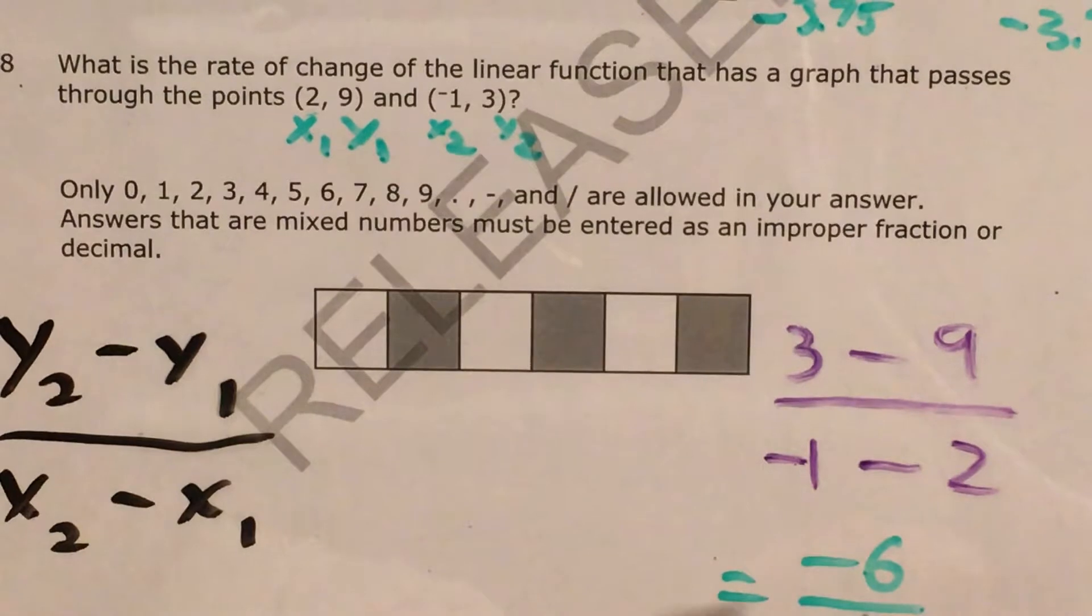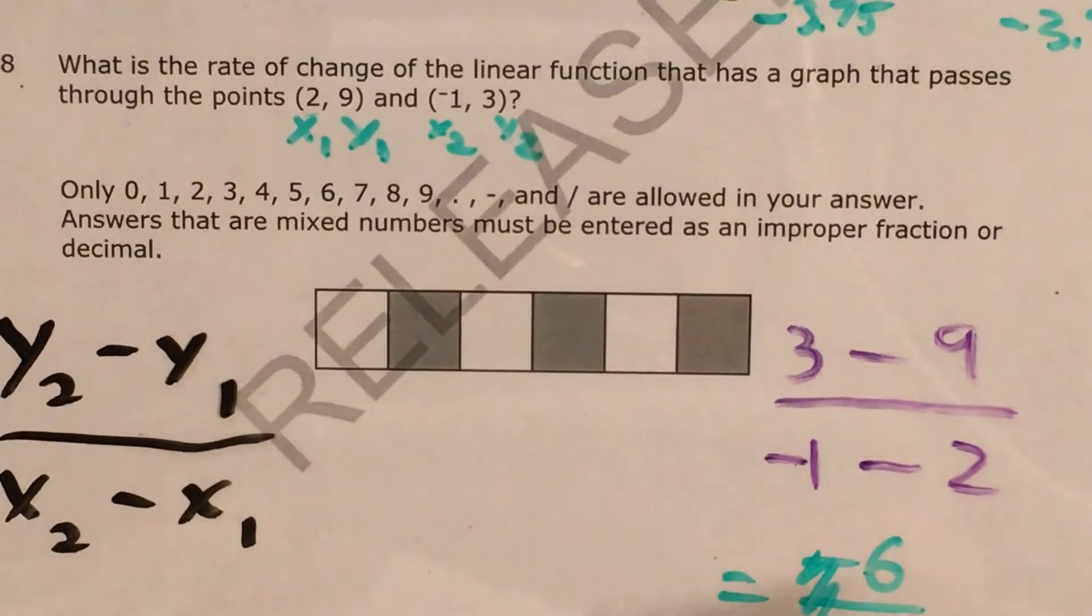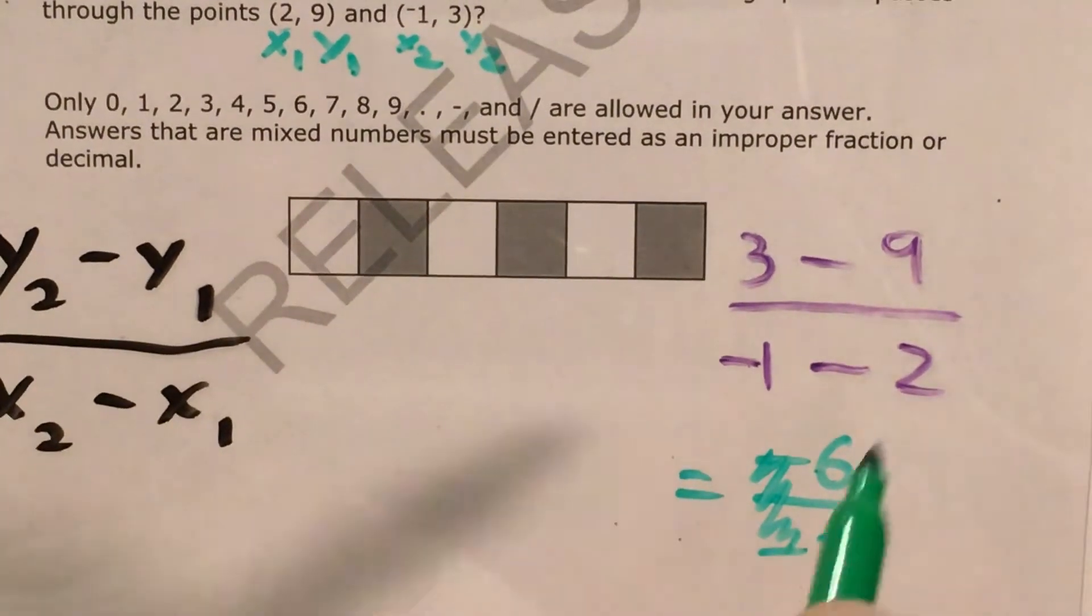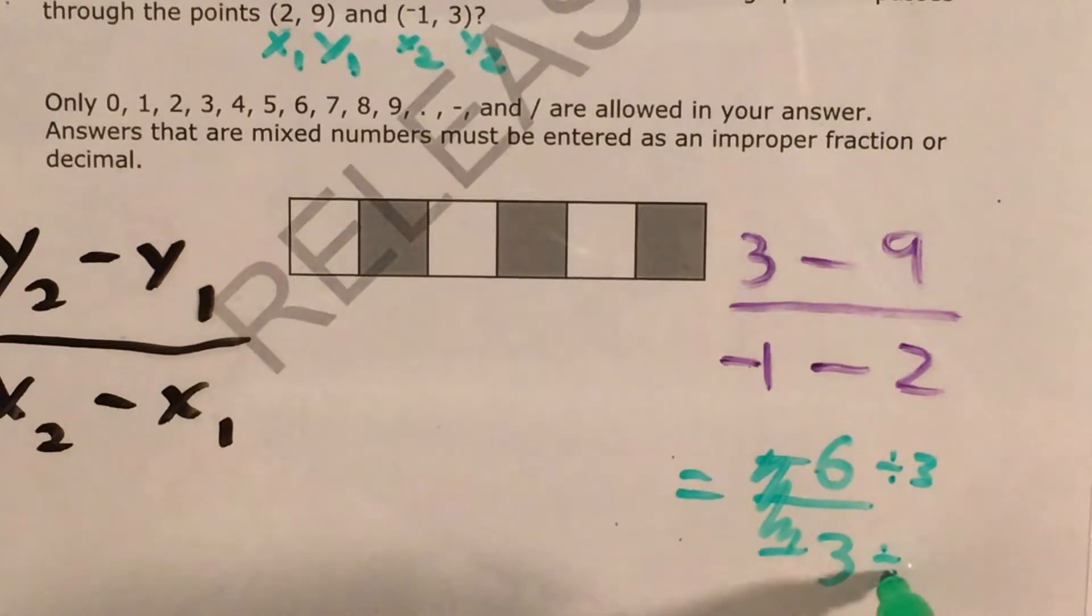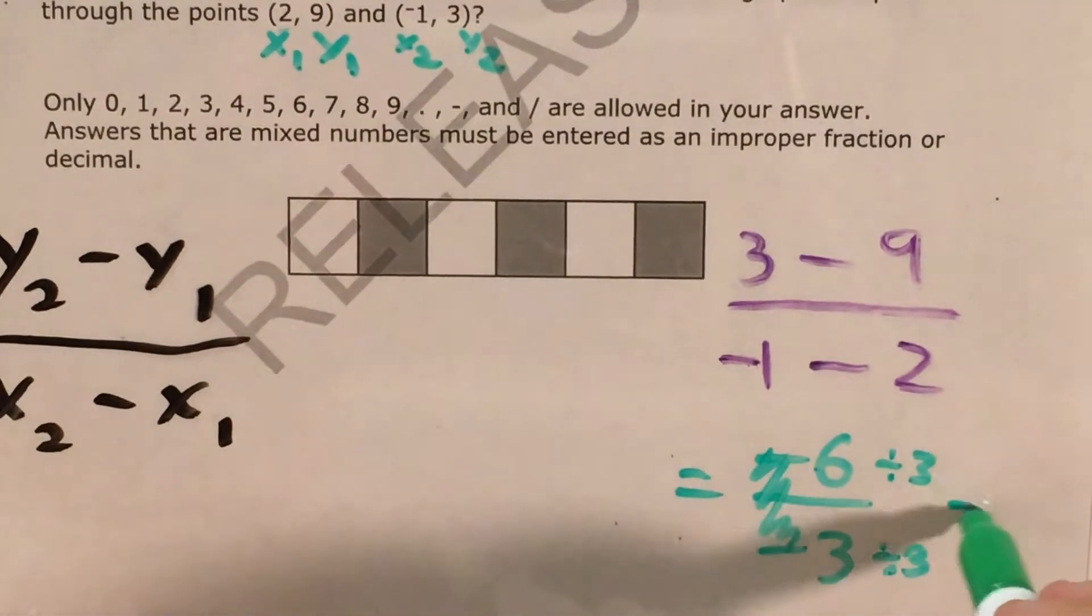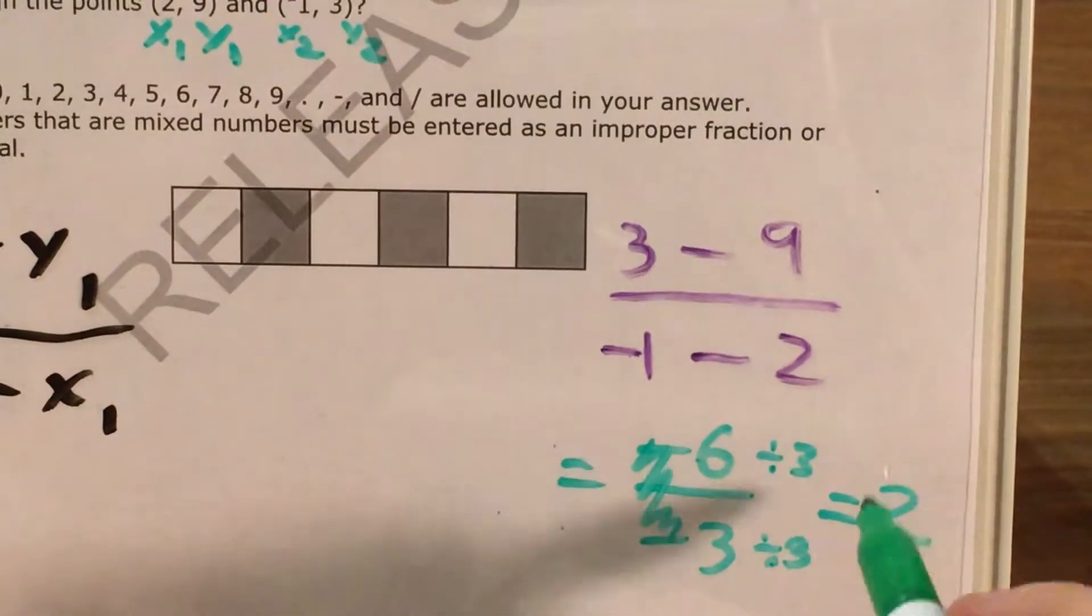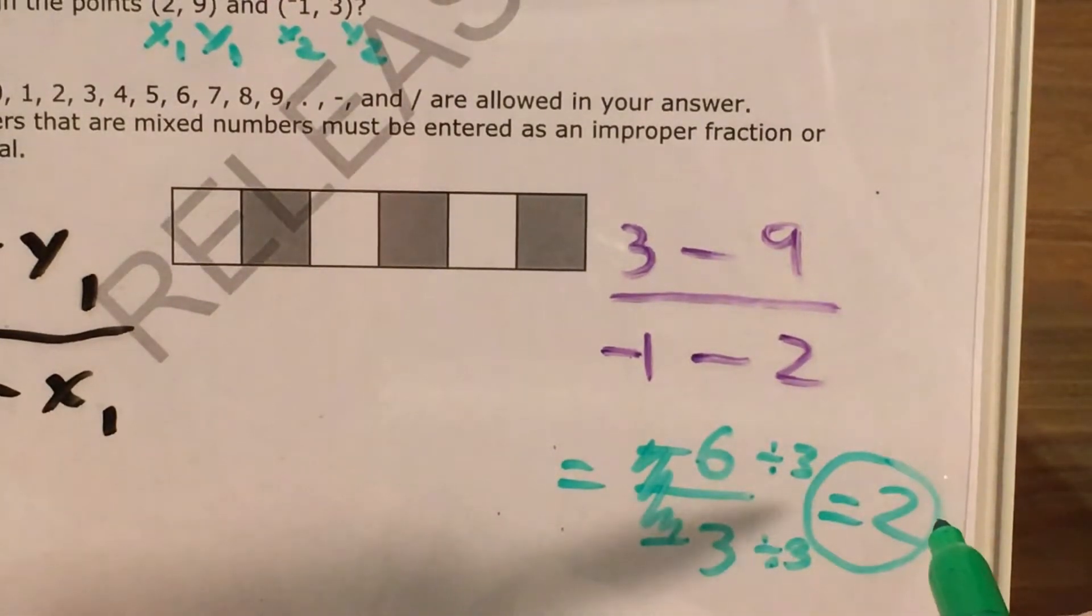So my slope is -6 over -3, but now I can go ahead and simplify. I'll get rid of my negative signs. Simplify this by dividing numerator and denominator by 3, and that equals positive 2. So my slope is just 2.